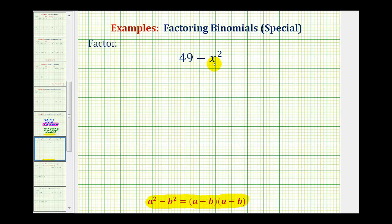49 minus x squared sometimes causes some problems because we're so used to having the variable term first. So there's a couple ways of approaching this. We can leave this in its current form and recognize that 49 is a perfect square, x squared is a perfect square, and we have a difference, so this factors into two binomial factors.